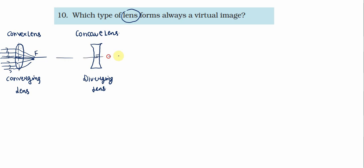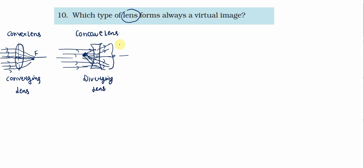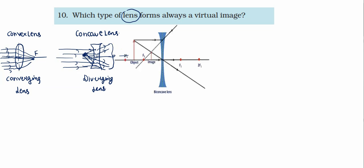Ek concave lens humara diverging lens hain. Suppose parallel light rays hain, then they do get diverged. Woh aisi diverge ho jati hain and they appear to diverge from the focus — aisa lagta hain focus se diverge ho jati hain. So these rays do never meet at a point and form the virtual image.